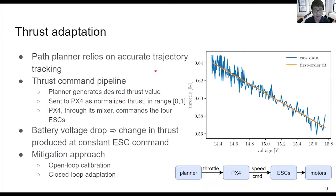Our path planner relies on accurate trajectory tracking, which means the low-level controllers should be able to track the thrust command from the path planner well. The thrust command pipeline is shown here. The planner generates the desired thrust value and sends it to PX4 as normalized thrust in the range from 0 to 1. The PX4 through its mixer commands the four ESCs. The ESCs then control the rotation speed of the four motors and generate thrust.